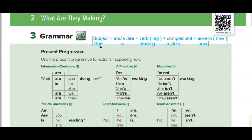Then add an appropriate complement. Notice: the subject is 'she' and the verb is 'is reading.' The complement must be logical — she is reading a story, a book, an article, a novel, a paper, a newspaper — anything related to reading. Note the time adverbs: 'now,' 'at this moment,' 'today' — anything indicating the action is happening now. This sentence is affirmative — مثبت — also called positive.